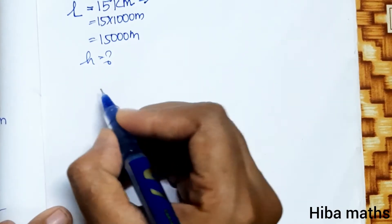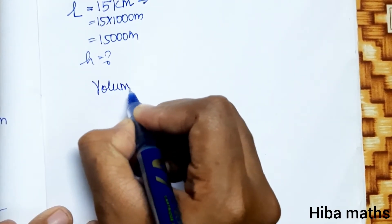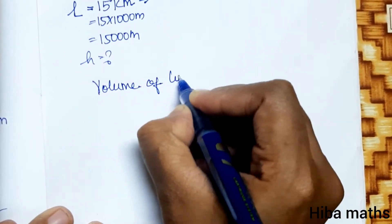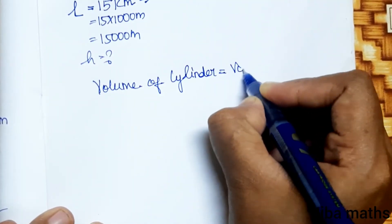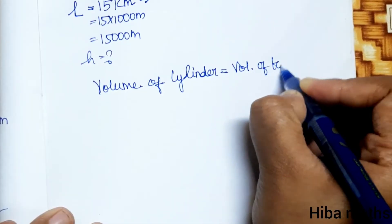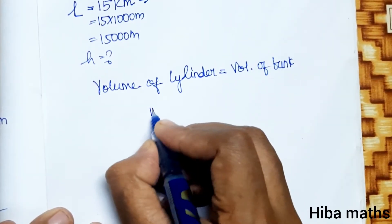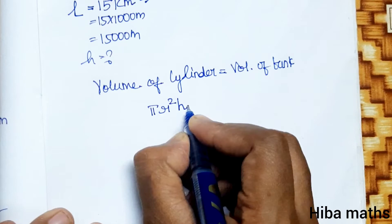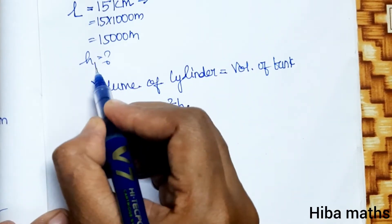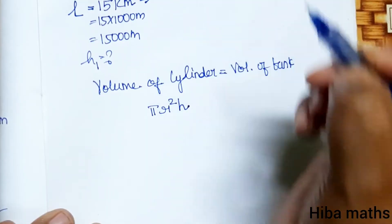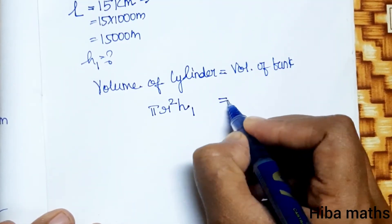Let's solve using volume. Volume of cylinder is equal to volume of tank. Pi r square h, where h1 is the cylinder height.